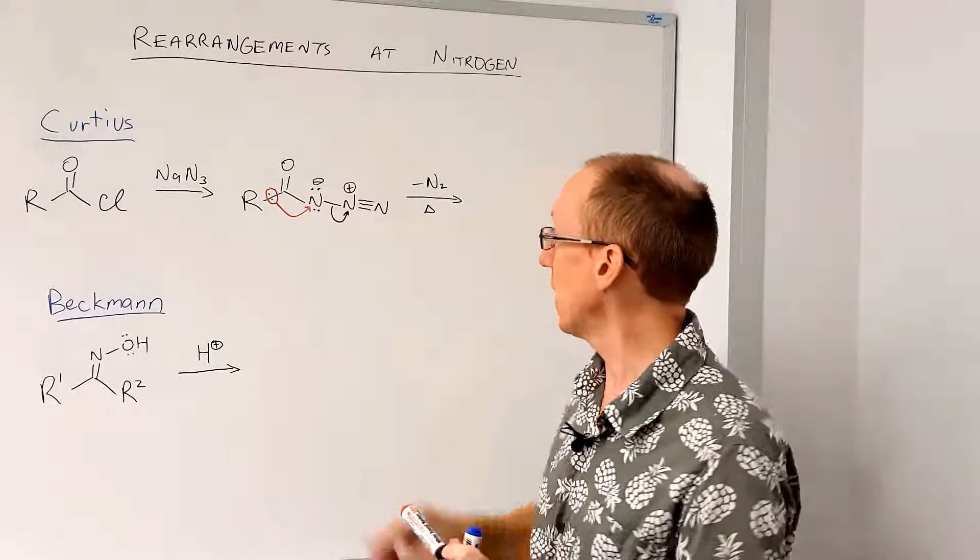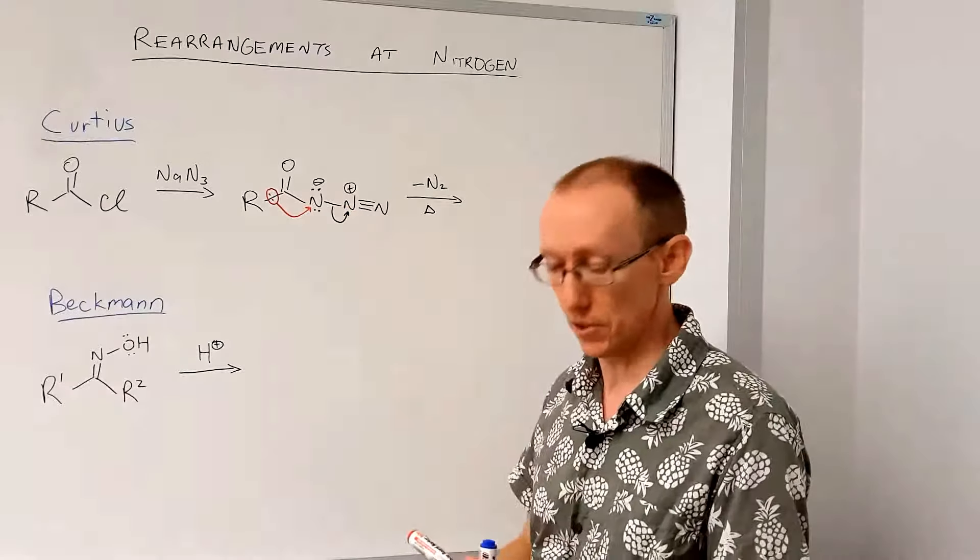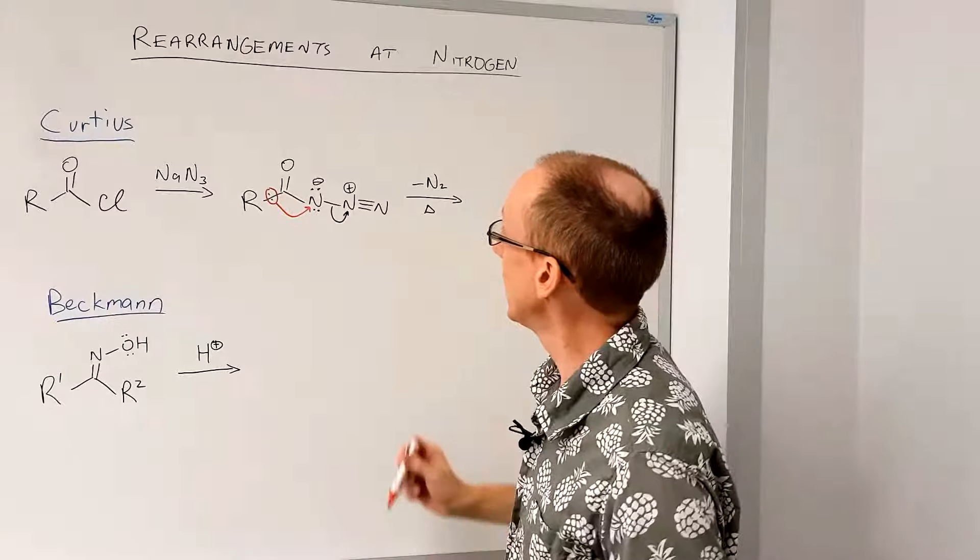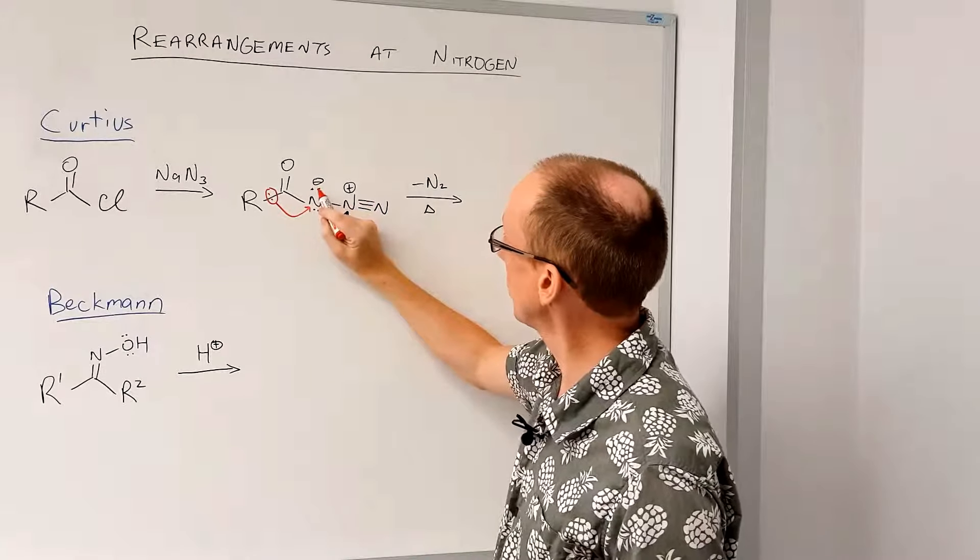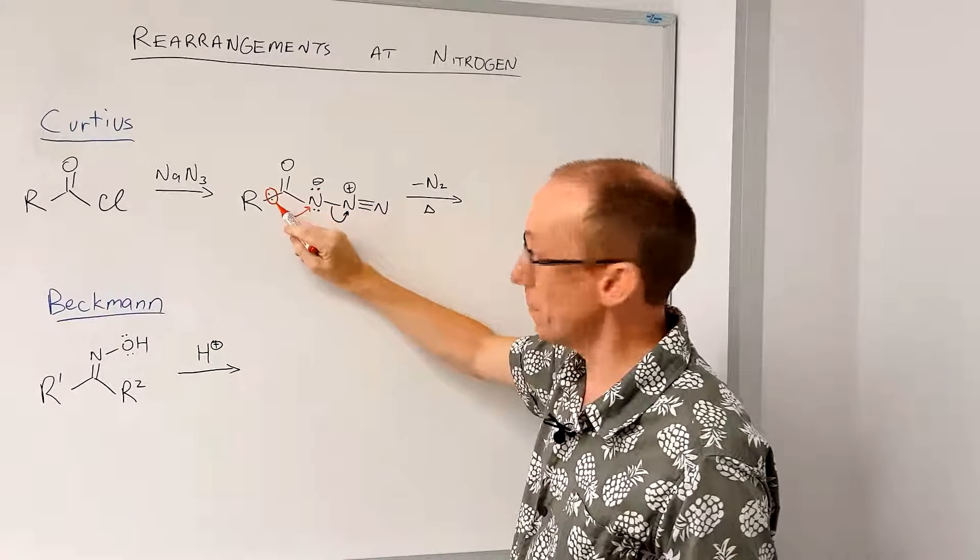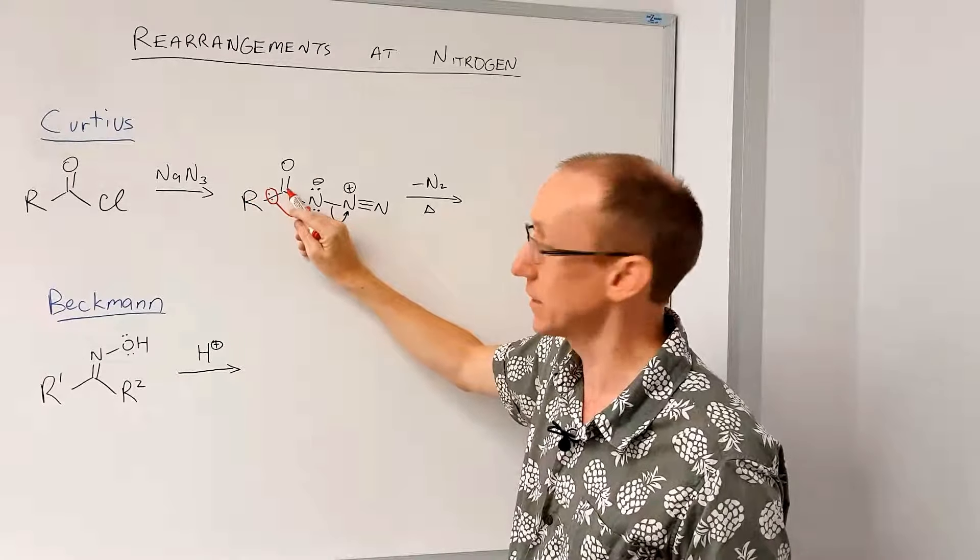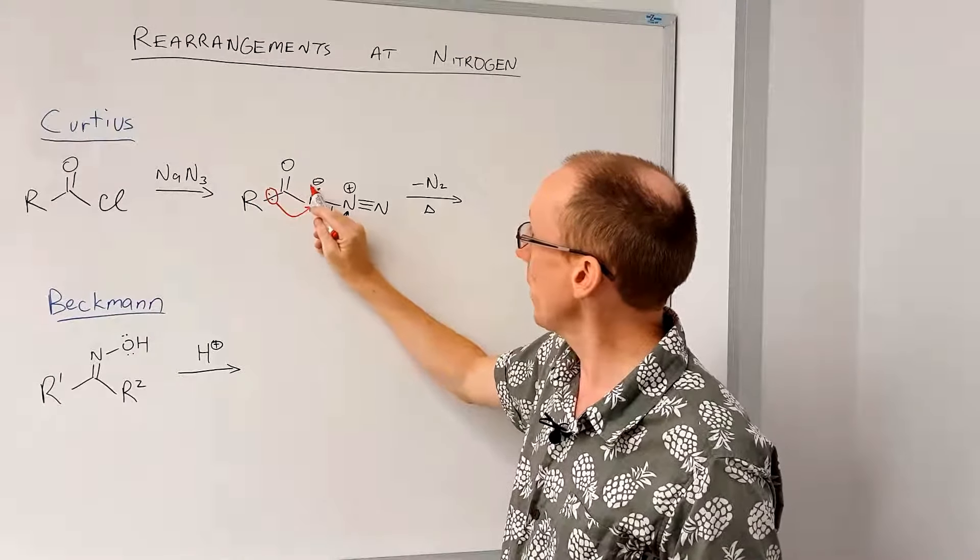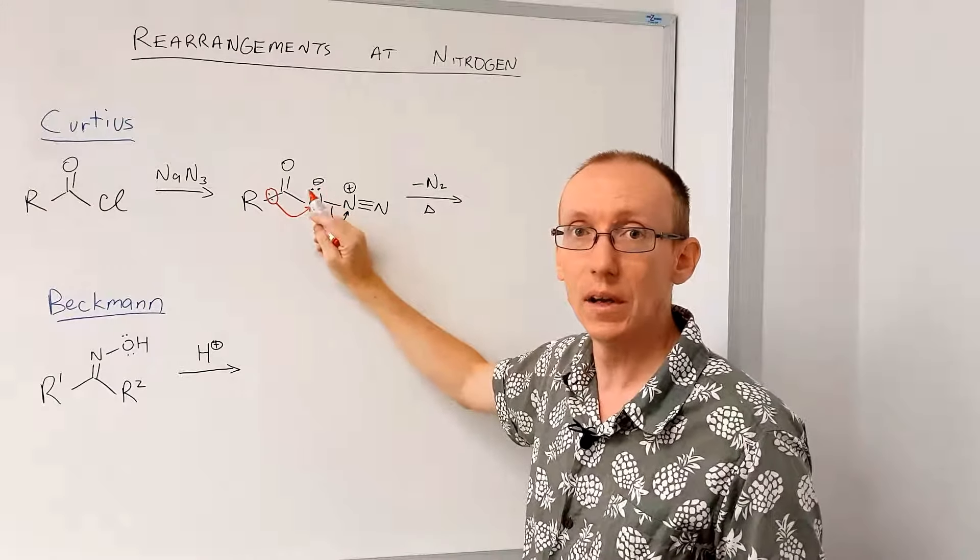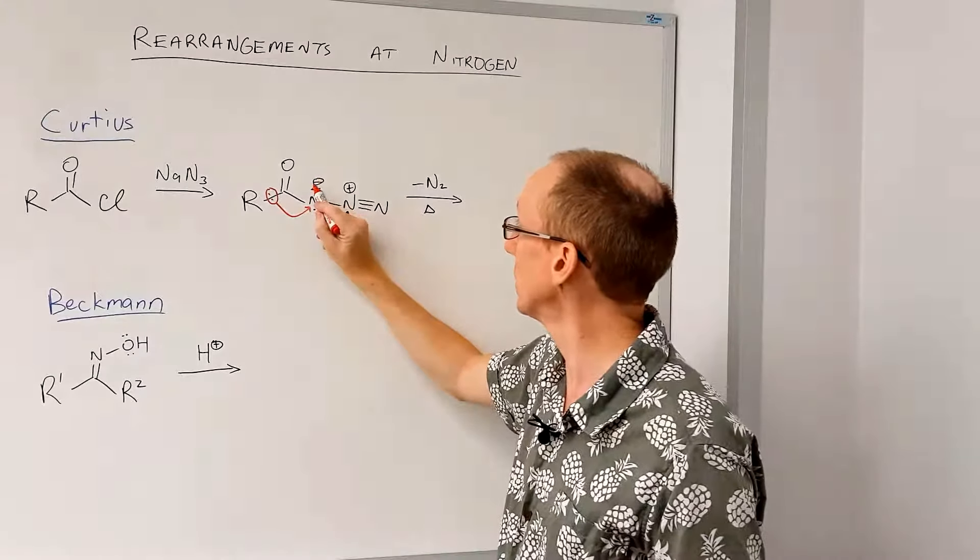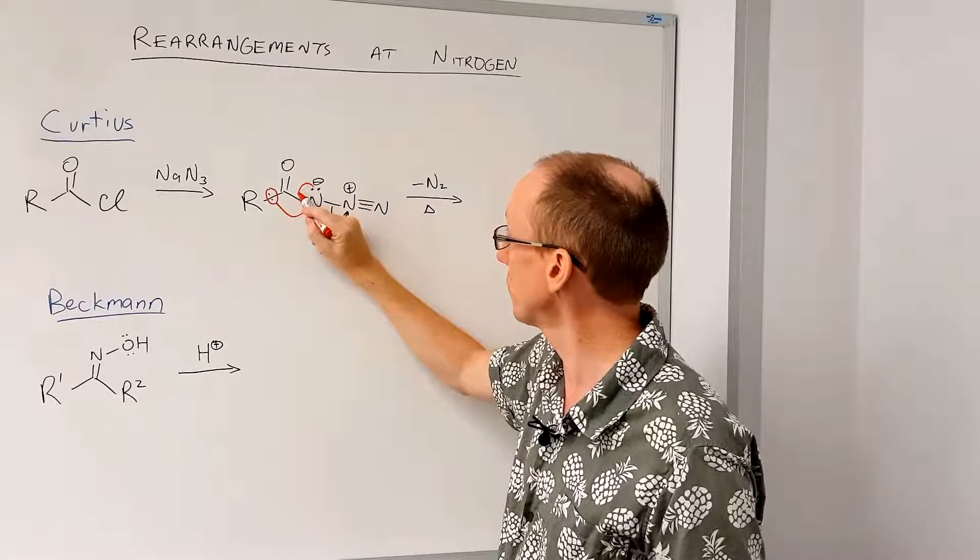And at the same time as that is happening, this dinitrogen group is leaving. And we can also show that as we lose that pair of electrons that are forming the sigma bond between this R group and this carbonyl carbon, another pair of electrons comes in to replace it or to help stabilize that position. So we draw this pair of electrons going into there.